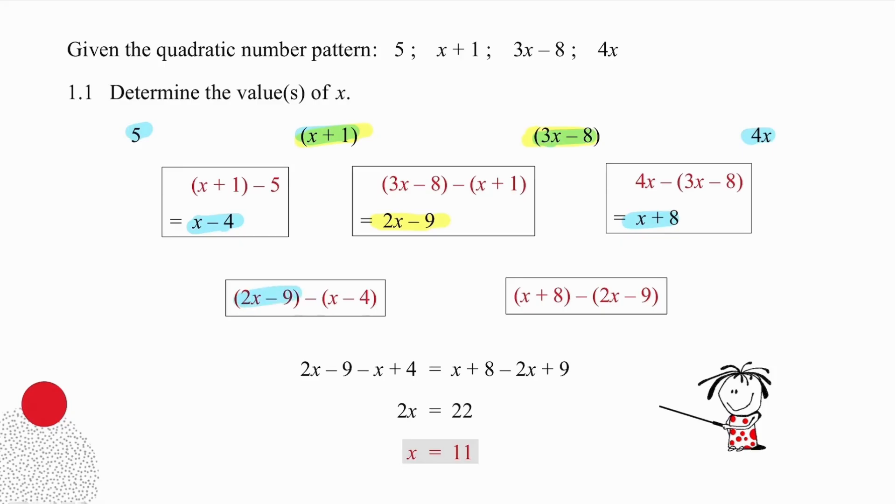However, when we take the second first difference and subtract the first one, we get the same answer as when we take the third first difference and subtract the second one. So, setting up that equation, being very careful with the signs, we work out that x is equal to 11.